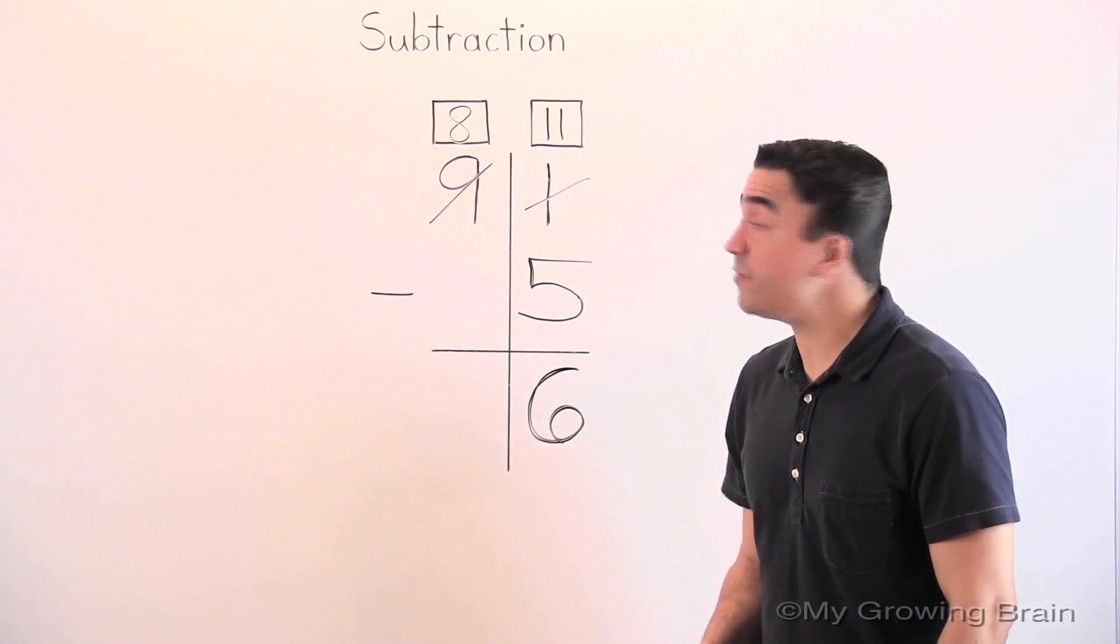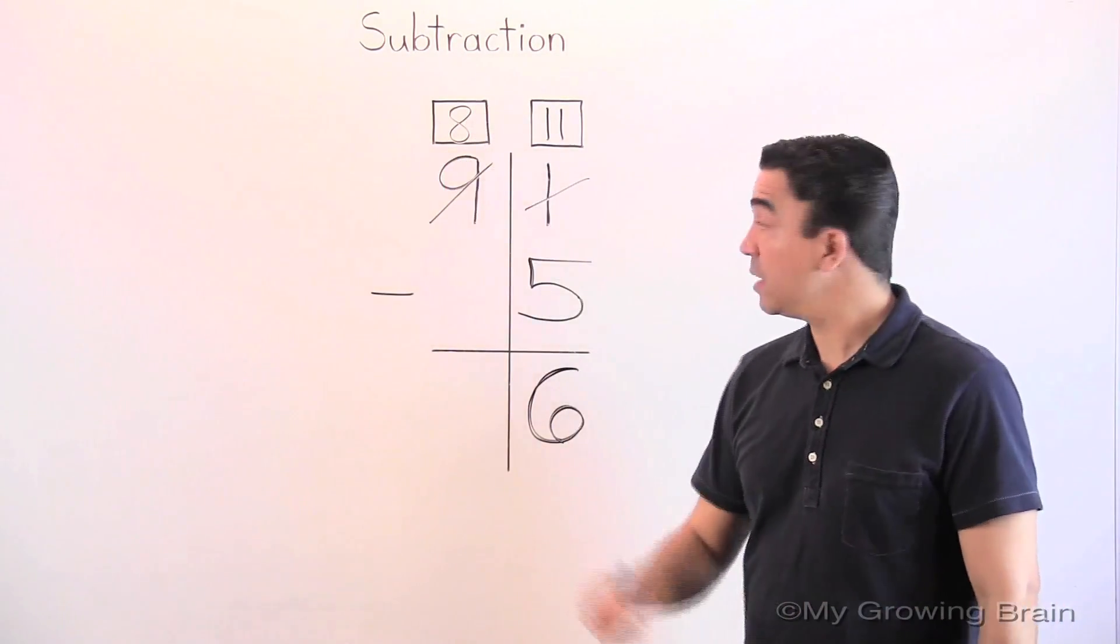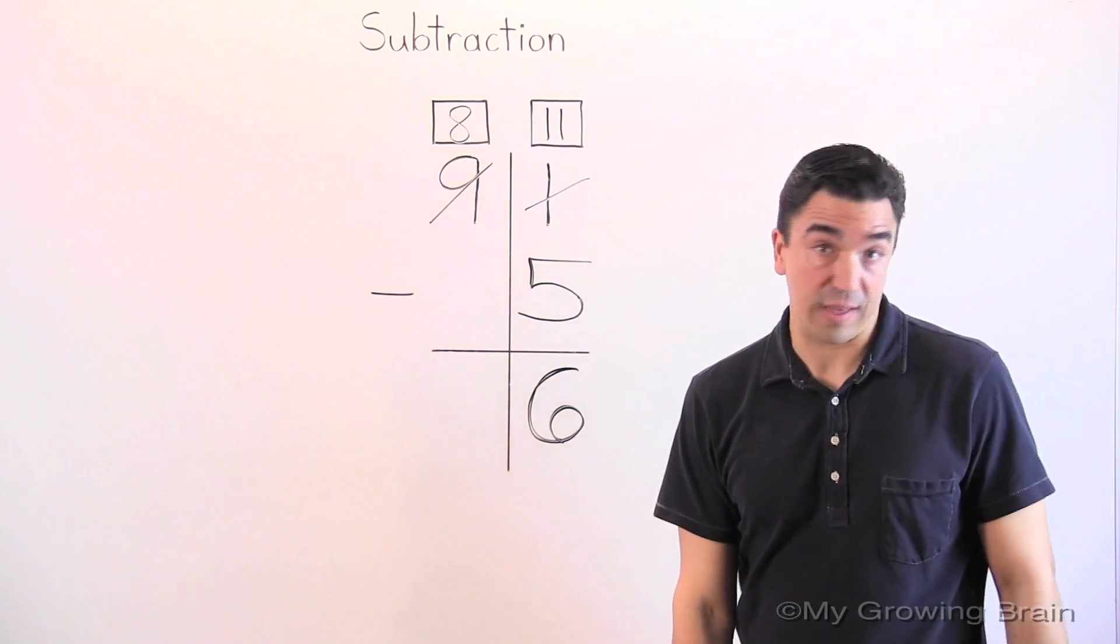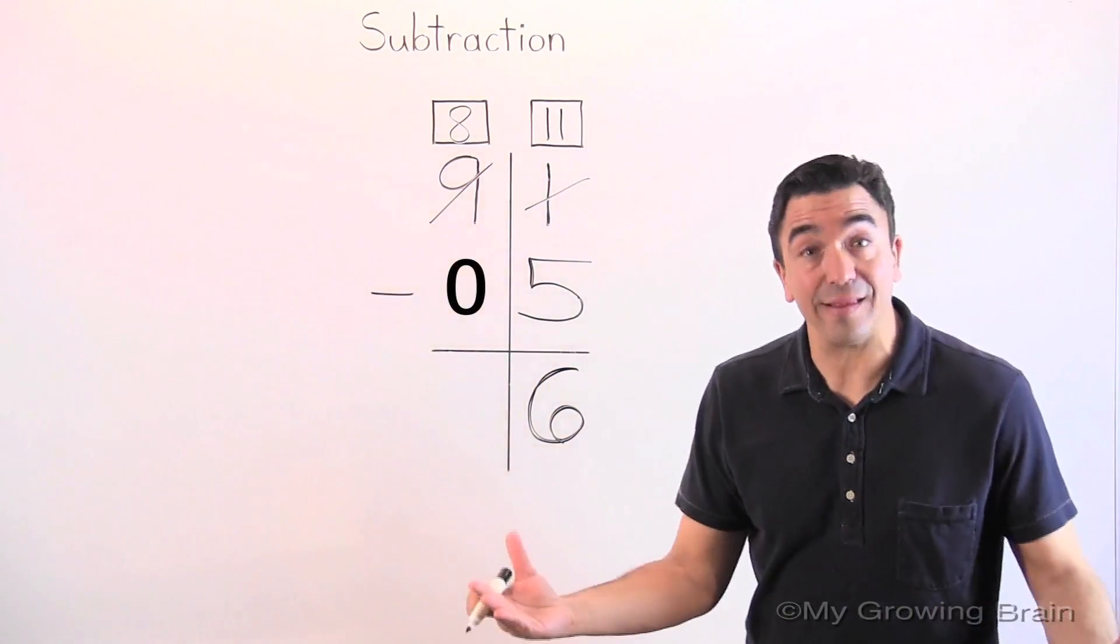Eight. Now, let's move back into the tens place. Eight minus nothing, or eight minus zero is eight.